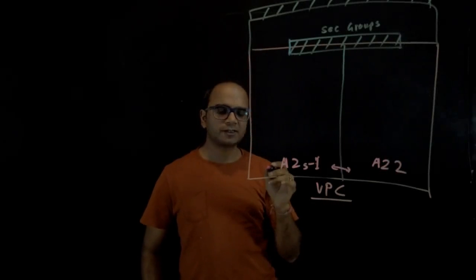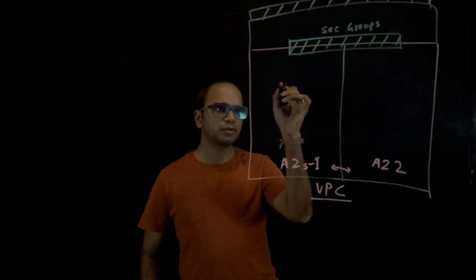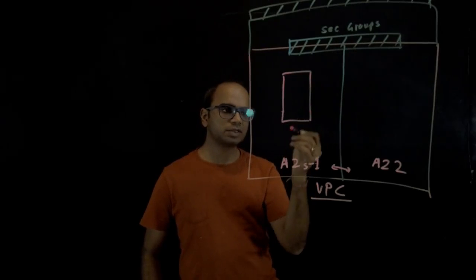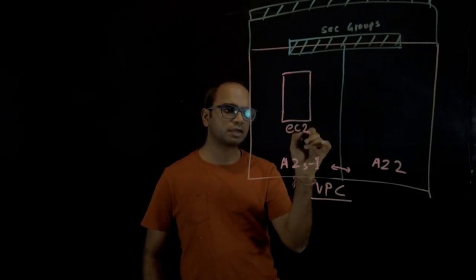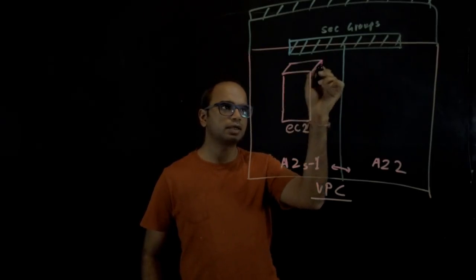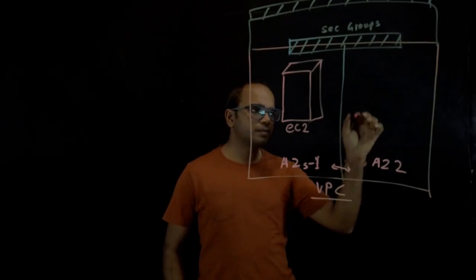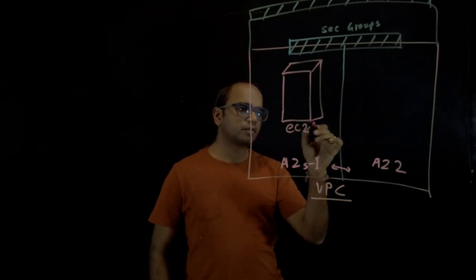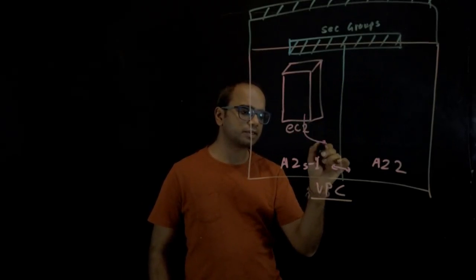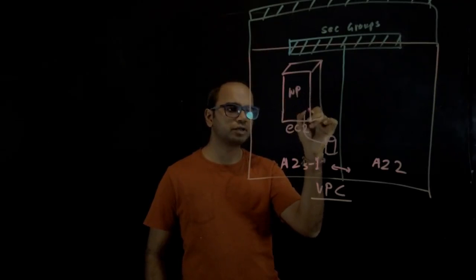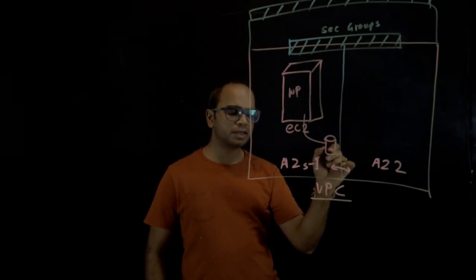Once the virtual private cloud is set up, the next thing I'm going to show you is how to launch EC2 instances. EC2 instances are nothing but the servers that you would run inside this VPC. Later, we would also connect this server with a database, and this server would be launching a WordPress application which would connect to that database.